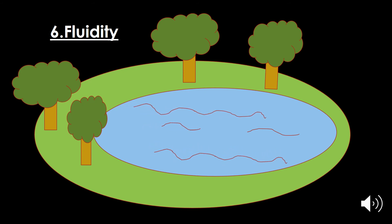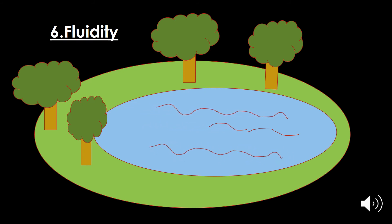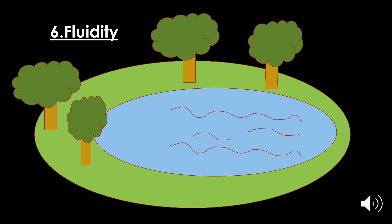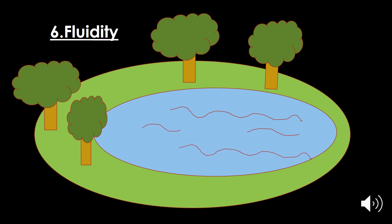The sixth property of the liquid is fluidity — liquids have a flowing nature. This is due to the sliding of layers of molecules over each other. For example, when you pour water from a glass onto a table, it flows further. Water molecules in lakes, oceans, and rivers slide over one another and show this flowing nature.